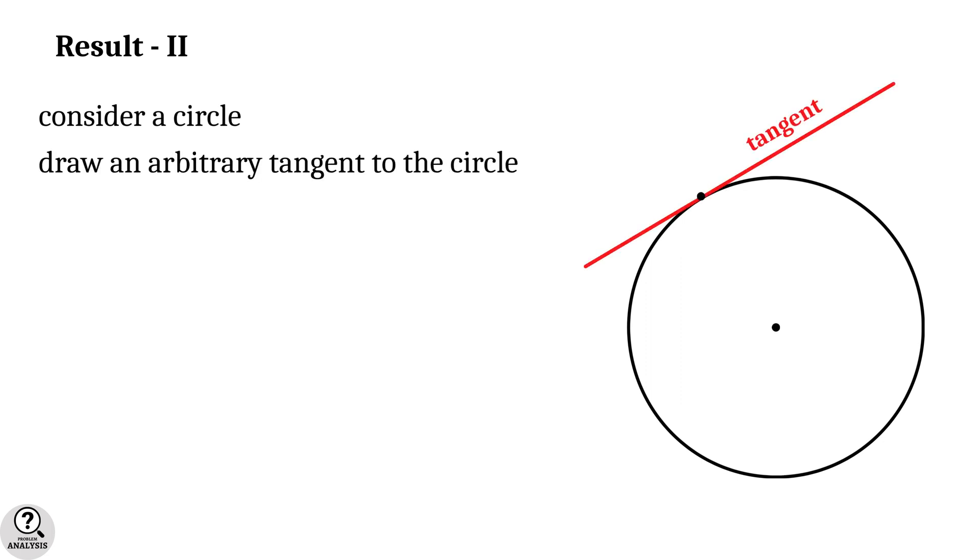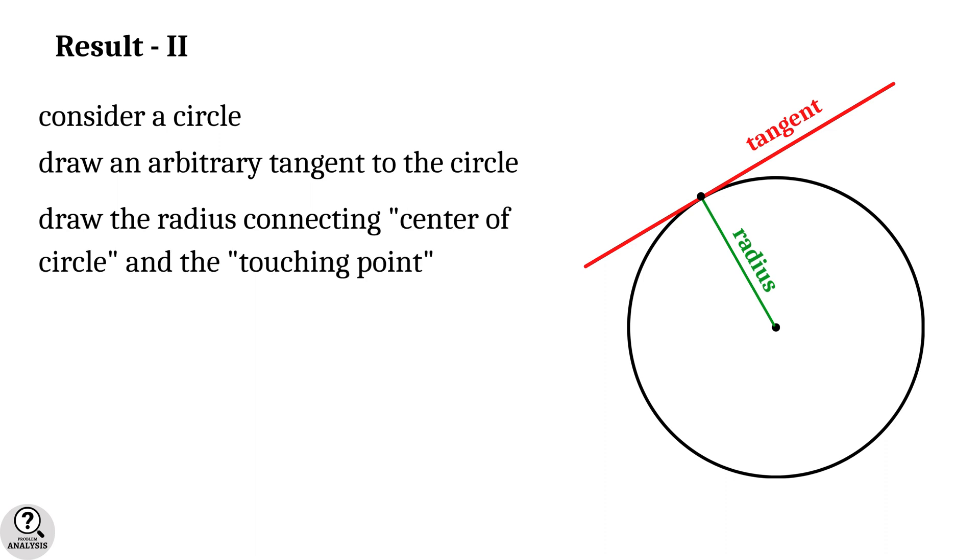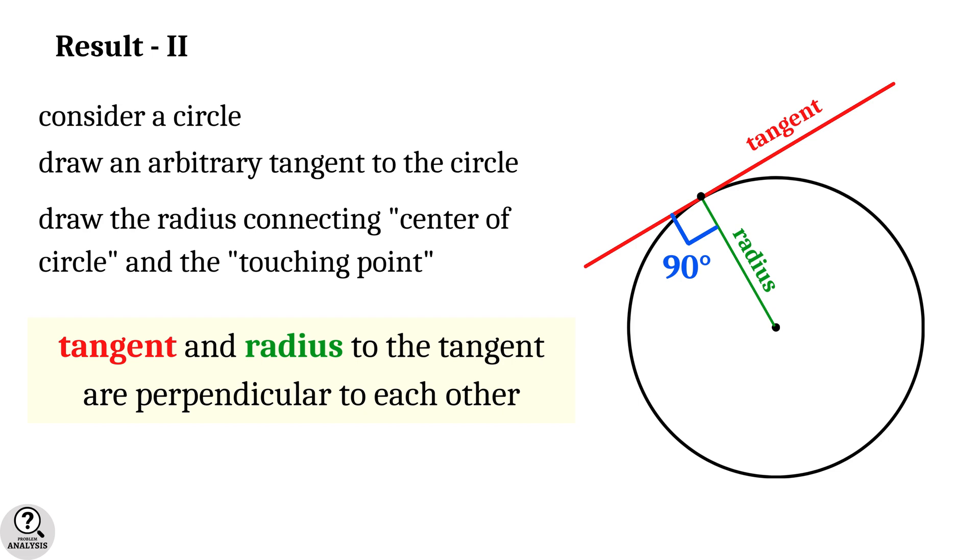Now result 2: Consider a circle and draw an arbitrary tangent to the circle. Now draw the radius from the touching point of the tangent. Then the fact is, tangent and radius to the tangent are perpendicular to each other.